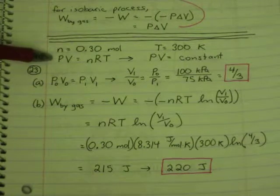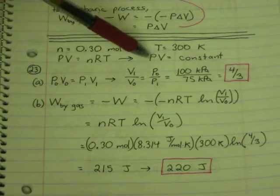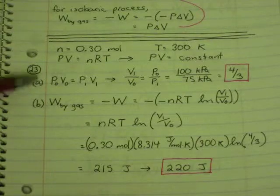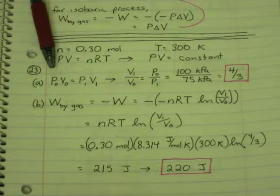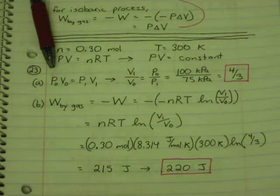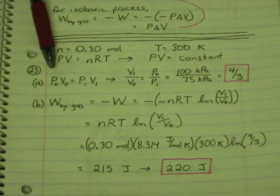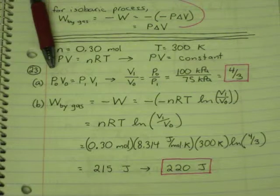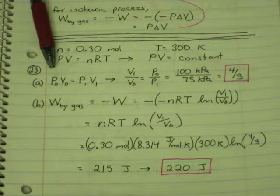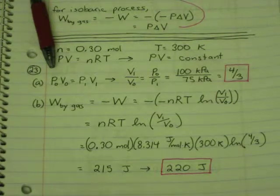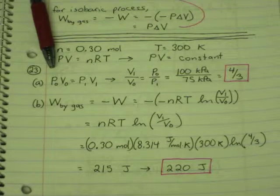Now in this case, the ideal gas law, PV equals nRT, yields PV equals constant, because n, r, and T are all constants. And then we can ignore nRT, and if PV equals constant, we can just say P0V0 equals P1V1. We're looking for the ratio of V1 over V0. So going from this equation, we can get V1 over V0 is P0 over P1. 100 kilopascals over 75 kilopascals. Whatever units we use, as long as they're the same, they'll cancel out. And we get 4 thirds. So V1 is 4 thirds of V0. Or to answer the question, as it's written, we can say that the volume increases by a factor of 4 thirds.